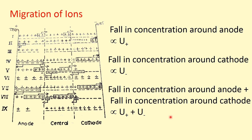Now the migration of ions. As the cations and anions move with different speeds during electrolysis, the change in concentration around the anode and cathode also differs. This can be understood by considering a cell divided into three compartments. The left-hand side compartment is the anode, the middle compartment is in between, and the right-hand side compartment is the cathode. Initially, equal numbers of cations and anions — seven each — are present in all compartments.